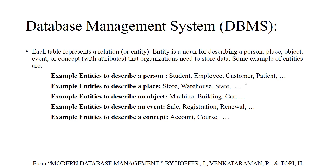Examples of place entities are stores and warehouses, and object entities include machines and buildings. Concept entities include things like accounts or courses. These are examples of entities for each kind of object or event that an organization is interested in keeping information about.